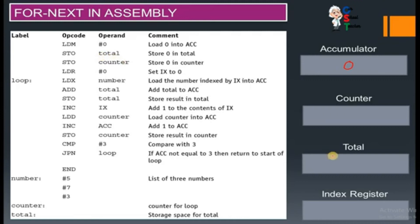Then, store total — whatever value the accumulator has will be stored at the memory address labeled total, so total becomes zero. Then store counter — the accumulator value is also stored in counter. After that, LDR zero — load the index register: zero will be stored in the index register, setting it to zero.